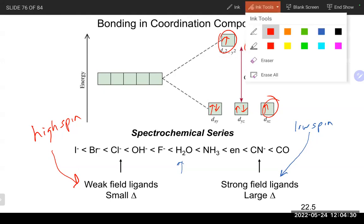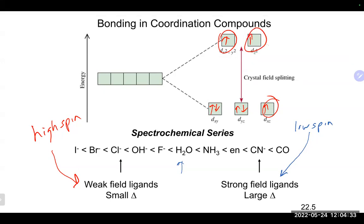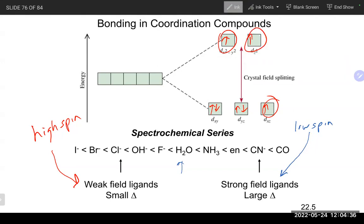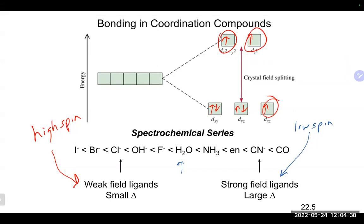Sometimes there aren't enough electrons to populate any orbitals above the lower set regardless of field strength, so high spin vs. low spin makes no difference. In the middle of the spectrochemical series, they'll sometimes give you instructions to do it as strong field or weak field, high spin or low spin. If not, it may be a situation where it doesn't matter anyway.